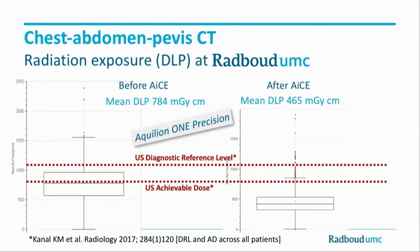The dose can actually be reduced. We measured dose on our scanner. Before ACE, we were at the US achievable dose level, which is below the reference level by one standard deviation. Now with deep learning reconstruction we have reduced it even further — roughly half the achievable dose level. We are really very, very low in radiation dose on these scanners with our deep learning reconstruction.